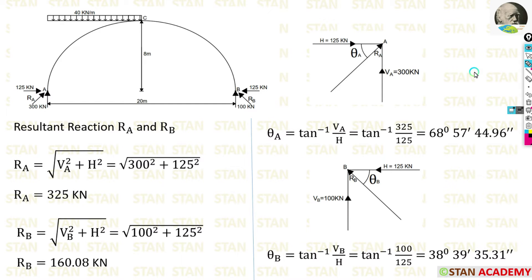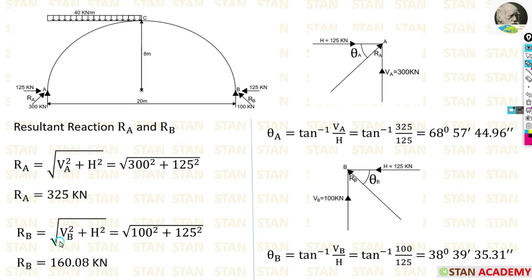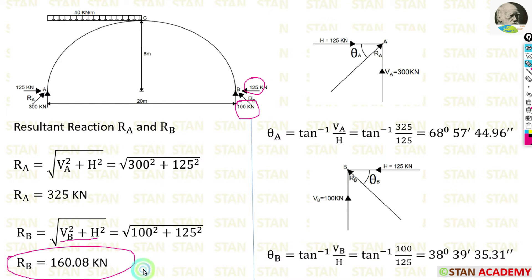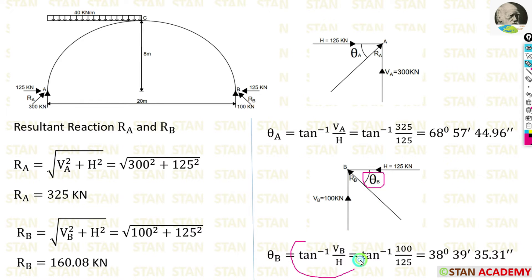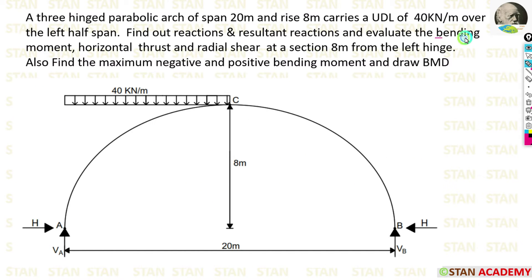The angle of RA is θA = tan⁻¹(VA / H). For RB: RB = √(VB² + H²) = √(100² + 125²) = 160.08 kN. The angle θB = tan⁻¹(VB / H), which gives us the direction of the resultant reaction at B.